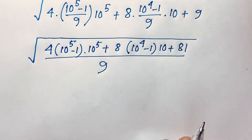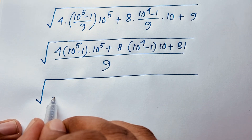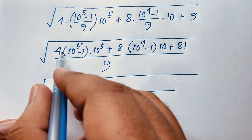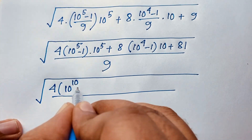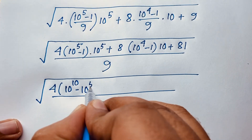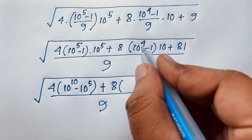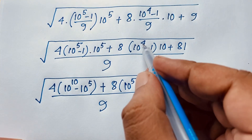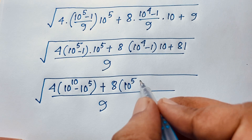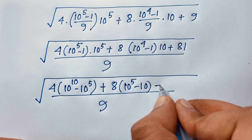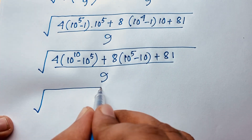I solve this question without a calculator. Now at this moment you can easily see here under the square root: it will be 4 times 10 to the power 5, times 10 to the power 5 — it will be 10 to the power 10 — minus this times this it will be 10 to the power 5. Plus 8 times — you can easily see this times this it will be 10 to the power 5 because 10 to the power 4 and exponent is 1 — so minus 10, plus 81.